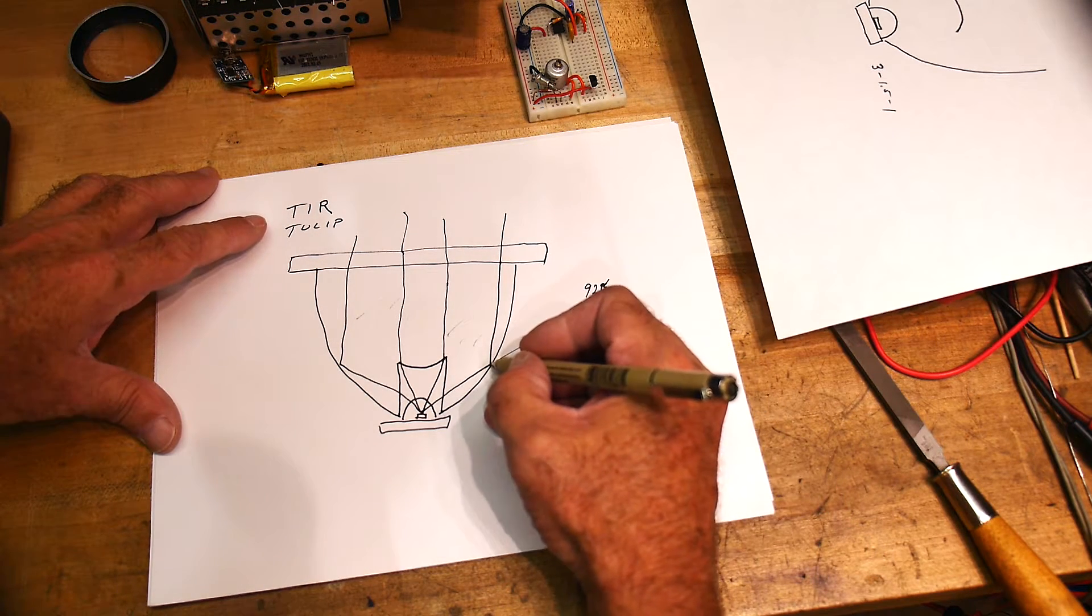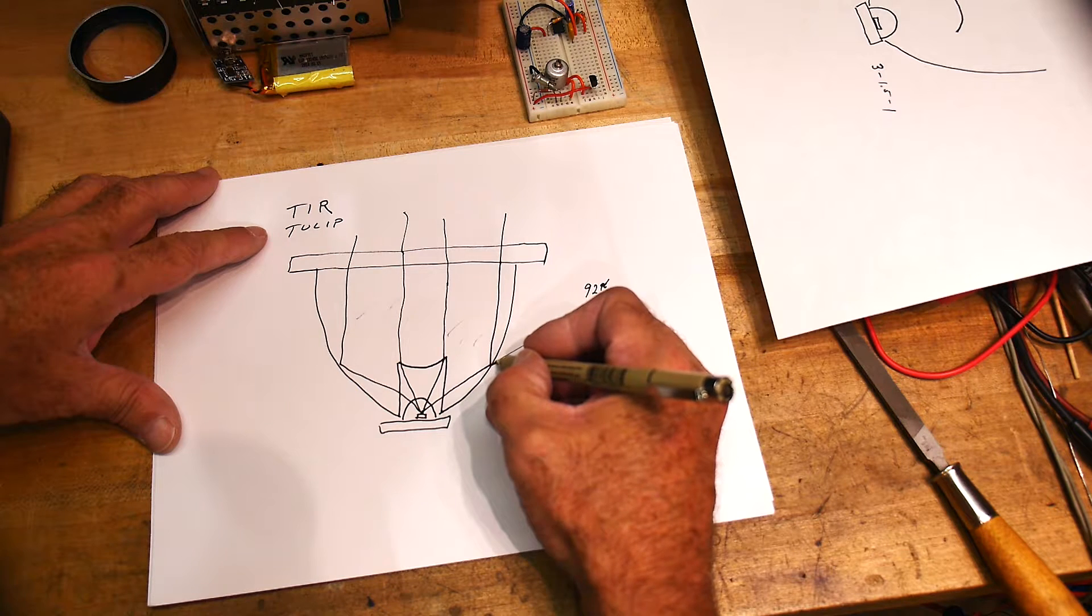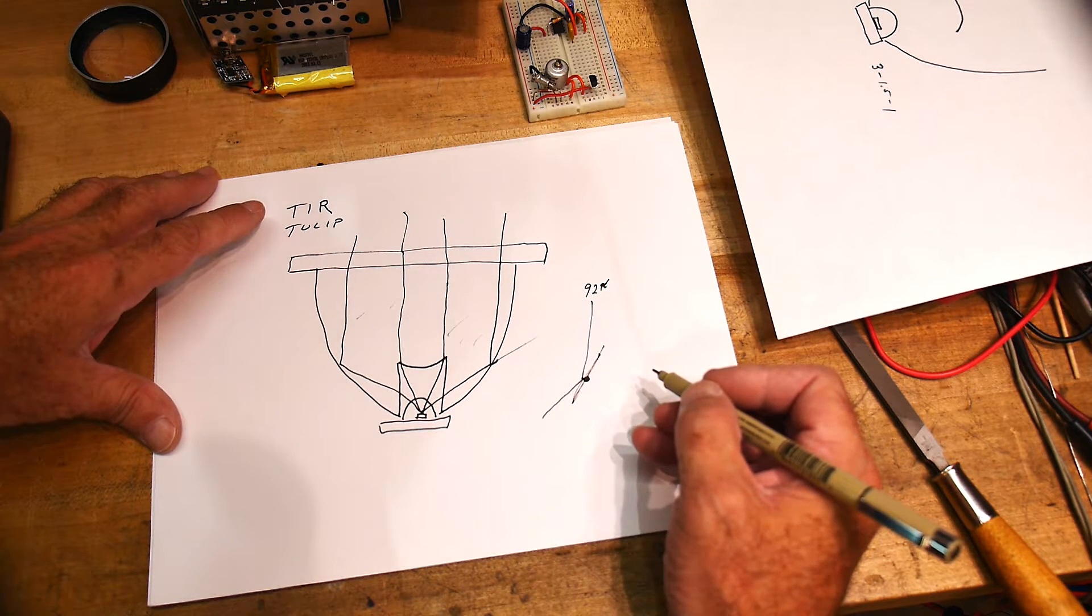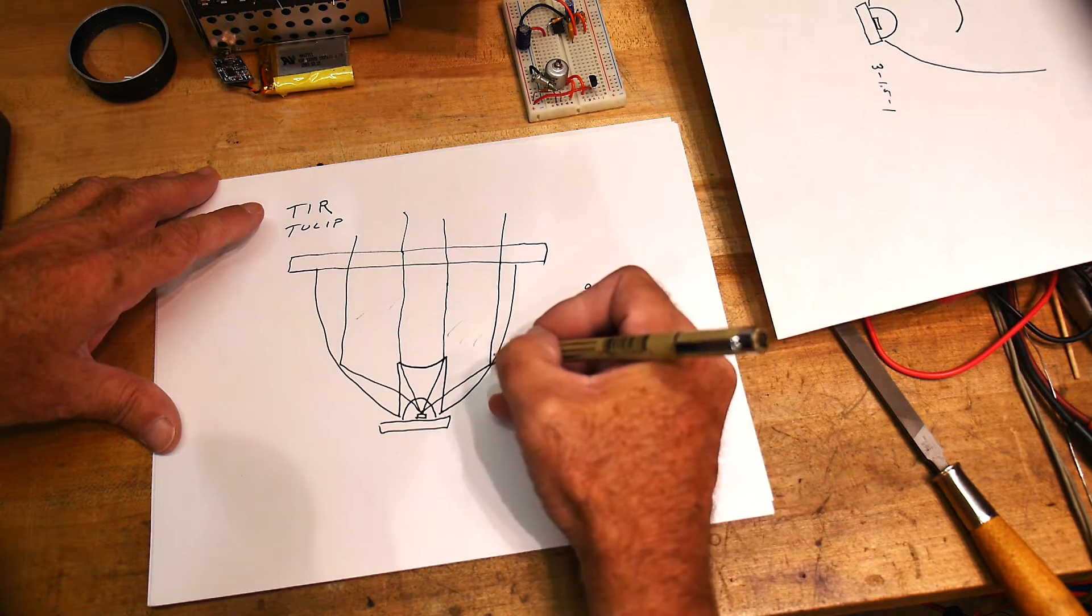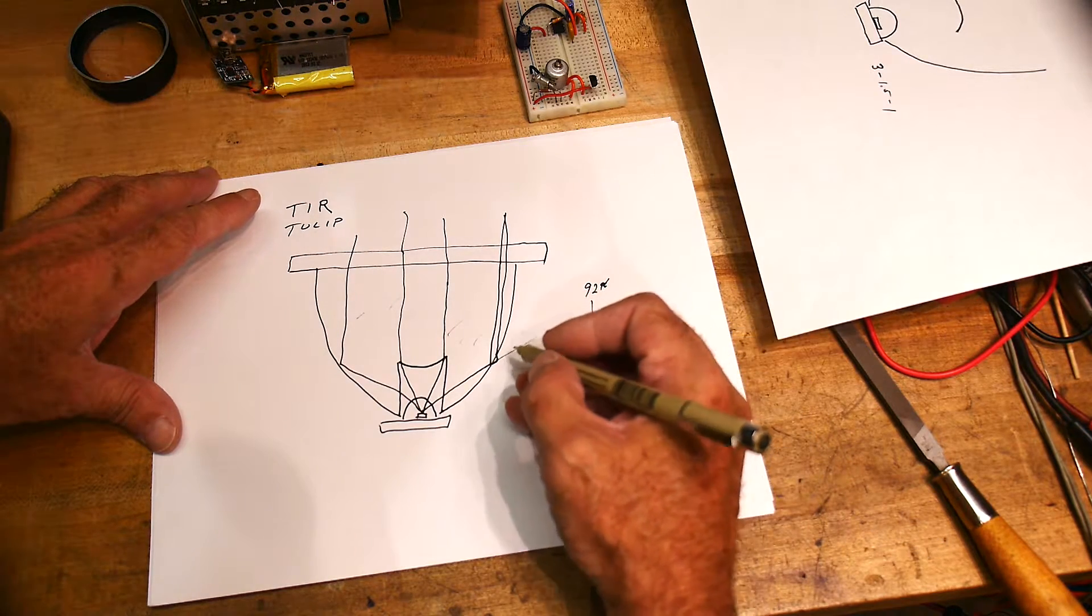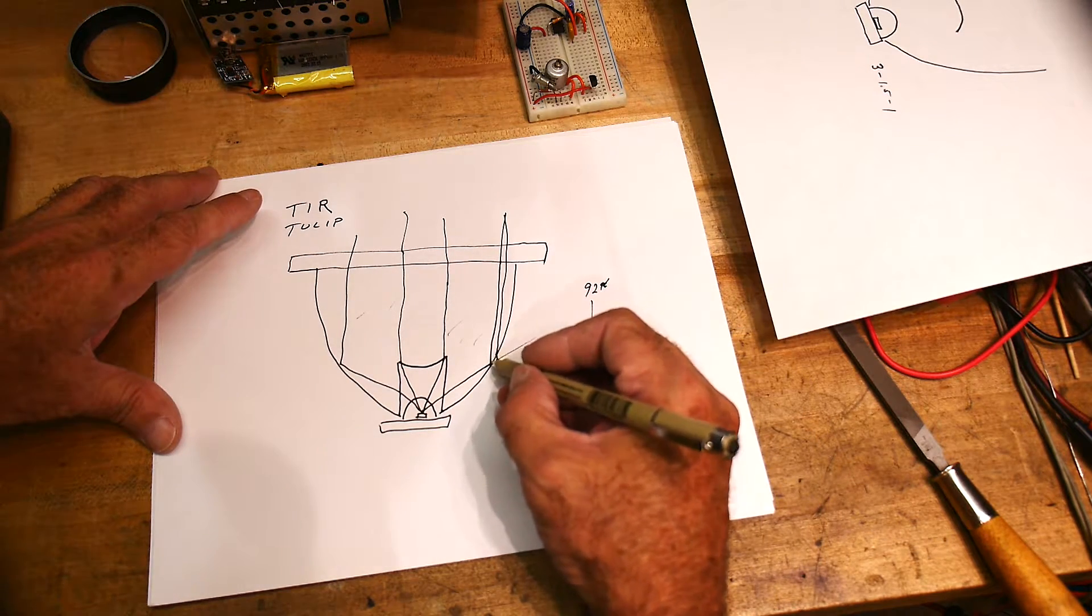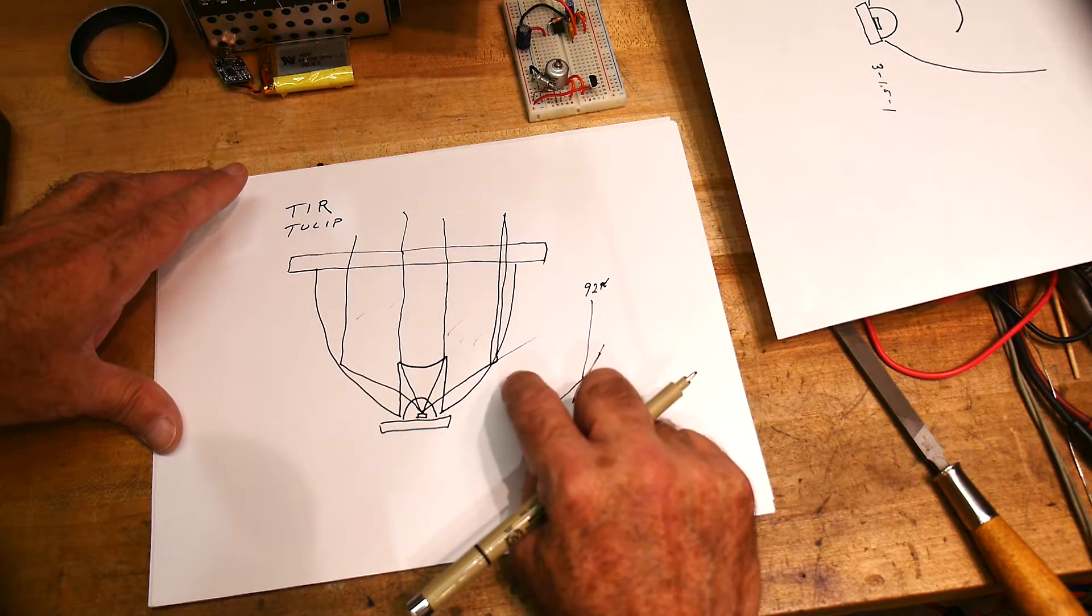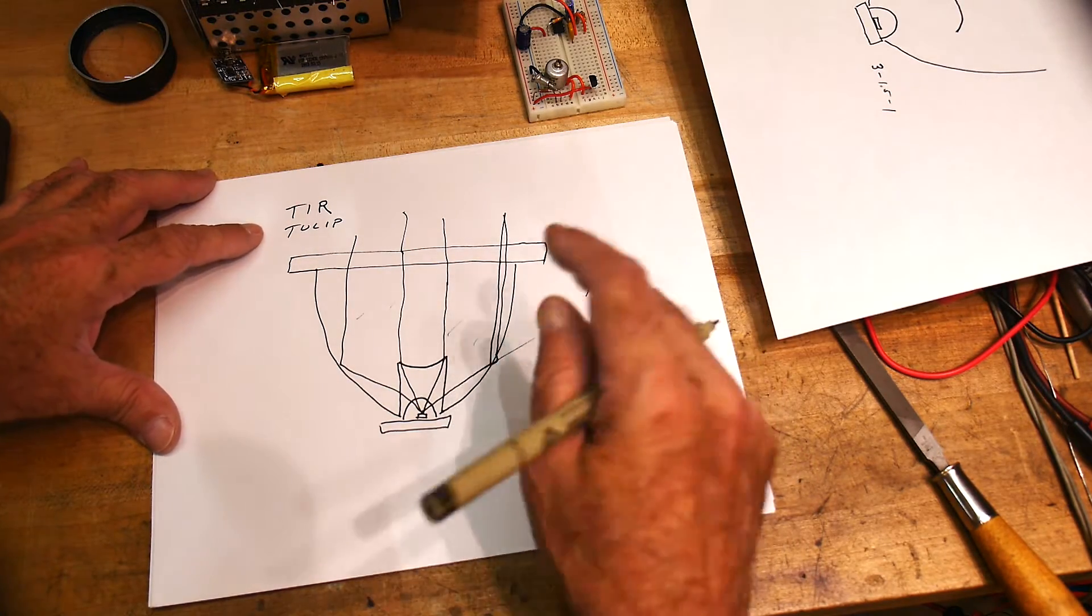But here in this total internal reflection, the EM wave comes in, and it's in one medium, and it sees this interface. And the EM wave actually travels outside into the air and says, 'Whoa, there's no place for me to go. I don't like it out here,' and it actually sucks back in and continues on its way. And this little funny excursion when it goes outside and then pulls back in, it's called the evanescent wave. You can look that up.